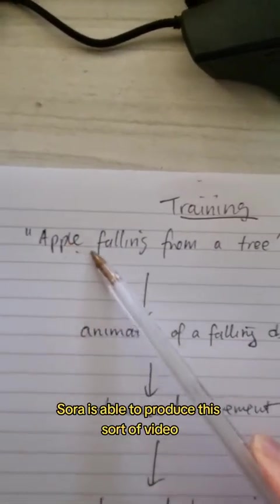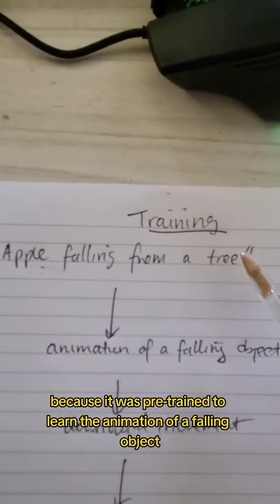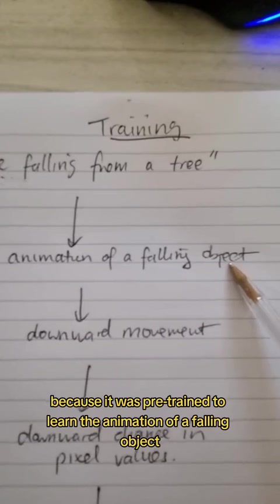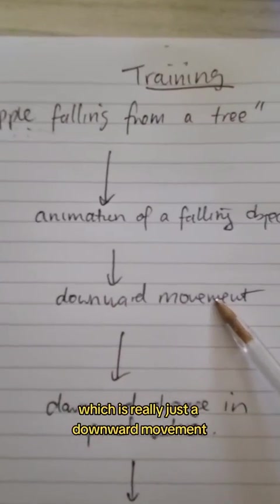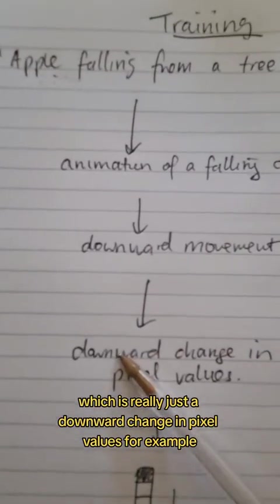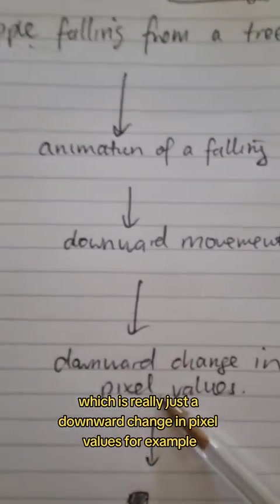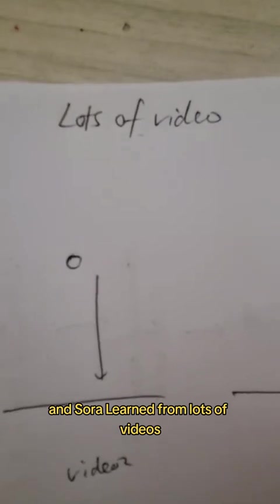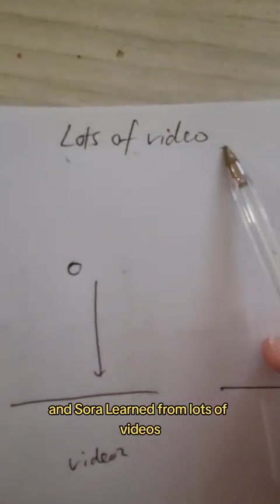Sora is able to produce this sort of video because it was pre-trained to learn the animation of a falling object, which is really just a downward movement, which is really just a downward change in pixel values. For example, given a column of pixels, the color of the object will naturally go down over a period of time. And Sora learned from lots of videos.